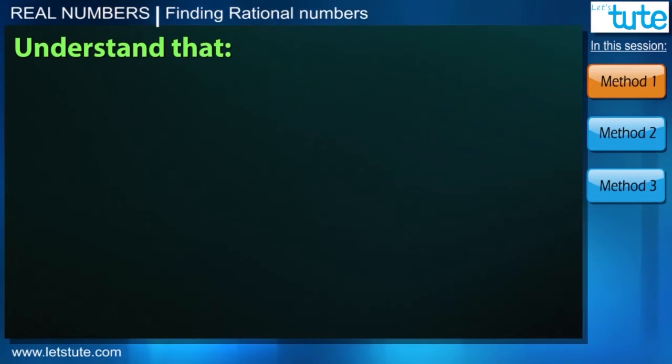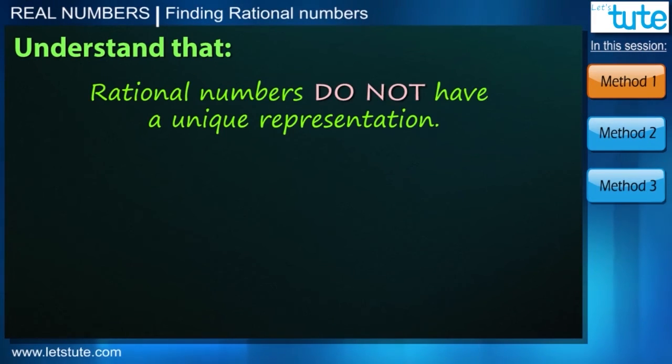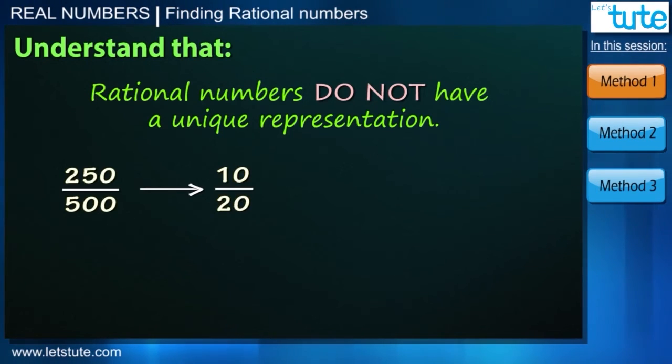So one more thing that we need to understand here that the rational numbers do not have a unique representation. For example, the rational number can also be written as 10 upon 20 or we can also write it as 5 by 10 or in more simplest form we can write it as 1 upon 2.